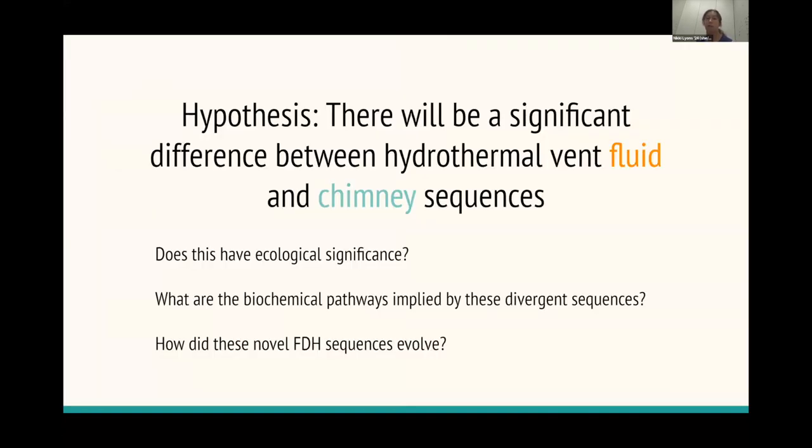So my hypothesis was basically that there would be a significant difference between the hydrothermal vent fluids and chimney sequences because if you look kind of deeper into it, the chemical composition of the subsurface compared to directly outside of the chimney where the fluids are is a little bit different. So I was thinking maybe microbes would evolve or pass on genes to reflect this difference in chemical composition. So some important questions to think about throughout this project was whether this would have ecological significance, bringing more diversity to the microbial ecosystem, and what biochemical pathways could be implied by these novel sequences. And also it's really important to think of how these FDH sequences evolved in the first place, because that could have really important implications astrobiologically, because you're evolving these sequences in a unique environment that might be found on other planets.